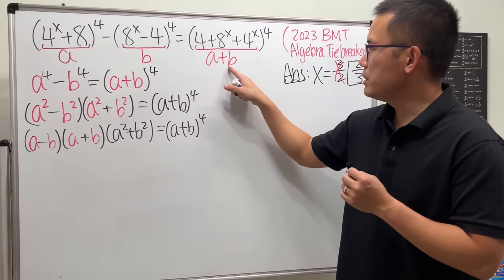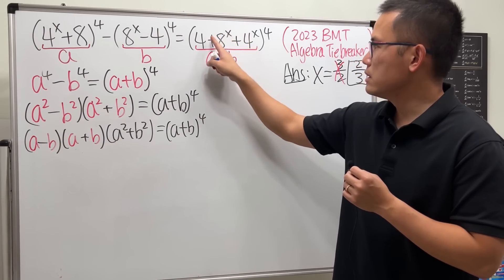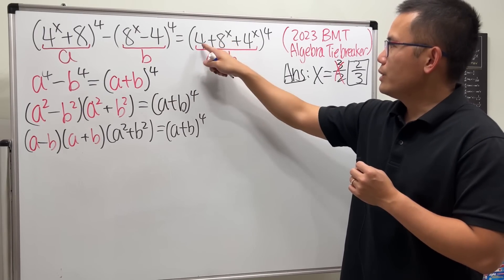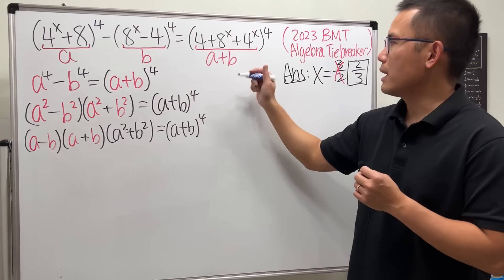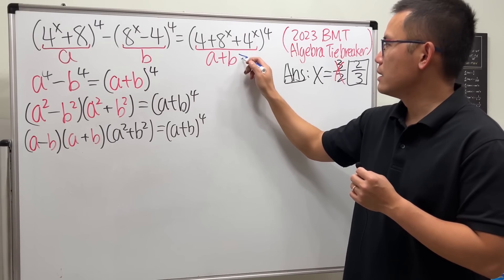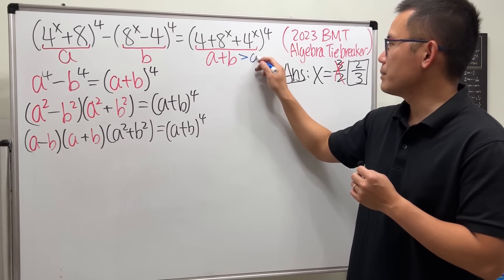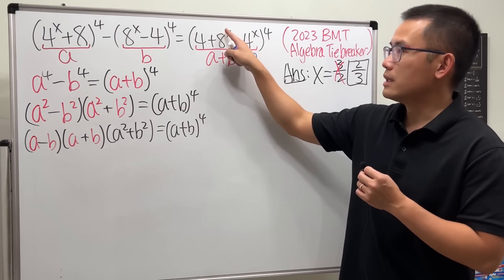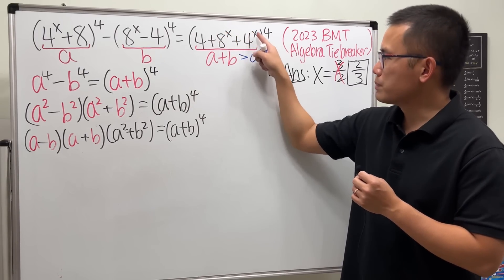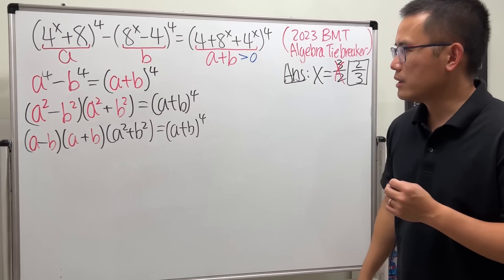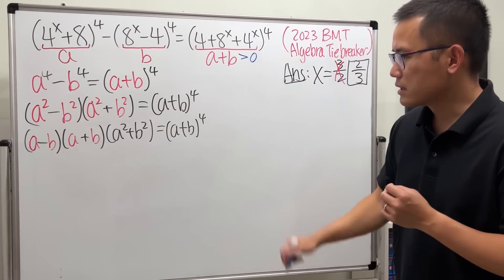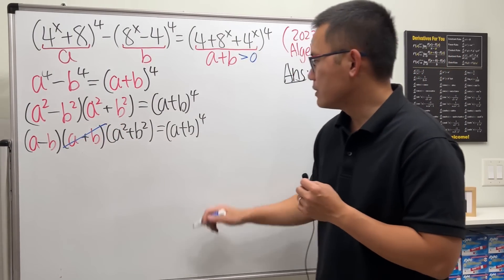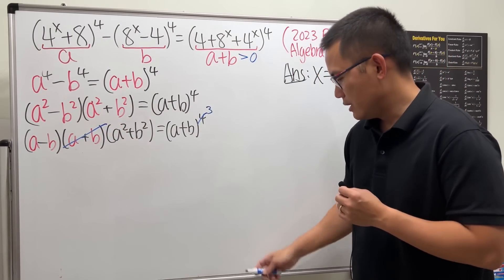Notice we have a plus b to the first power on the left and a plus b to the fourth power on the right. Since a plus b is always strictly positive — it's four to the x plus eight to the x, which is always positive — we can cancel one factor of a plus b from both sides, leaving a plus b to the third.